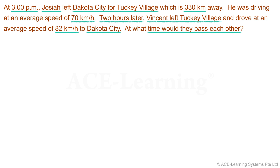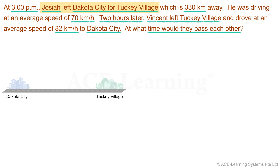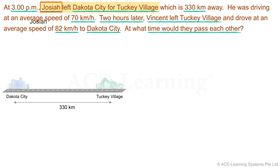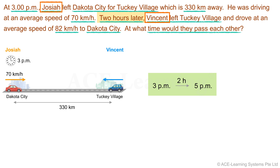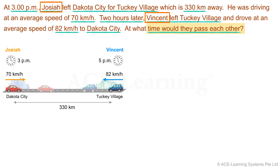Now let us draw a diagram to illustrate the problem. The two places mentioned are Dakota City and Taki Village, and the distance between them is 330 km. Josiah and Vincent were traveling in opposite directions towards each other. Josiah traveled from Dakota City to Taki Village, starting at 3 p.m. at 70 km/h. Vincent traveled from Taki Village to Dakota City, starting two hours later at 5 p.m. at 82 km/h. We are to find the time when the two of them pass each other.